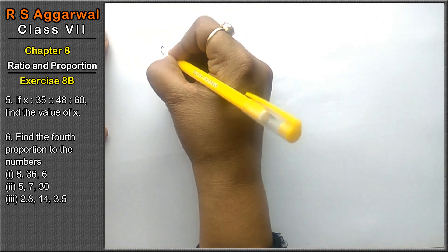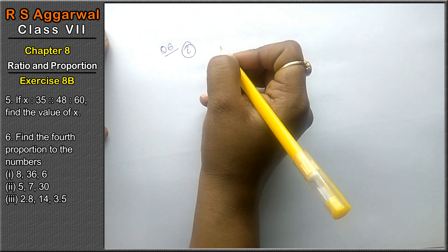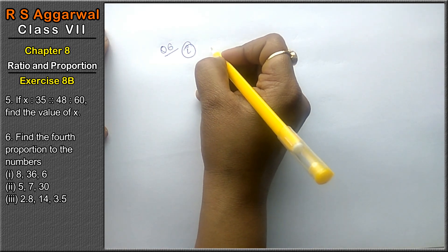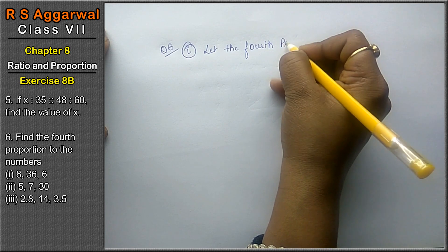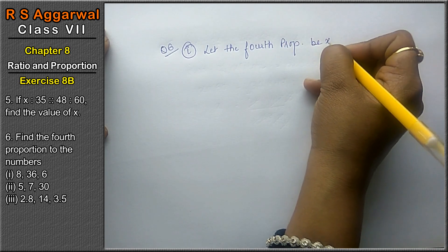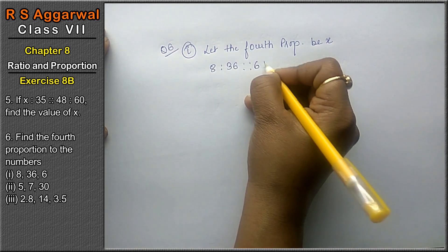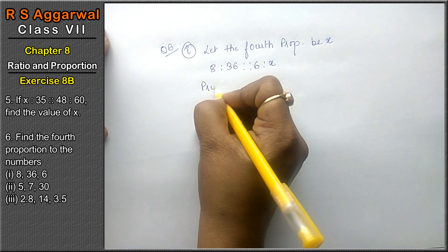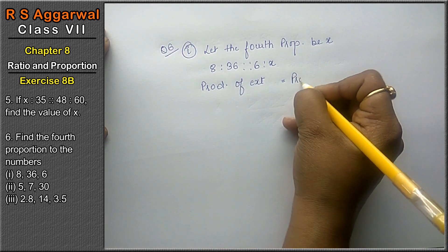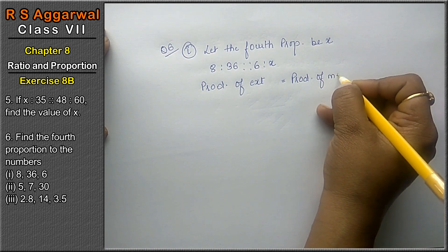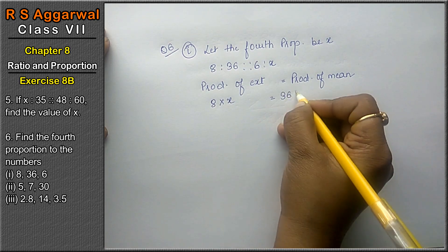Let's do question number 6 of exercise 8B, ratio and proportion. Question number 6, first part. Find the 4th proportion to the numbers. Whenever we have to find the 4th proportion, let the 4th proportion be x. So 8 is to 36 is to 6 is to x. Product of extreme equals to product of mean. Product of extreme is 8 into x, and product of mean is 36 into 6.